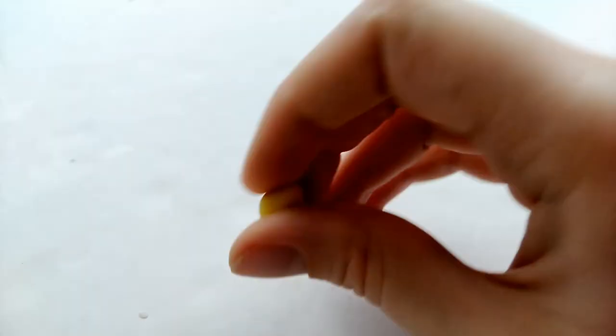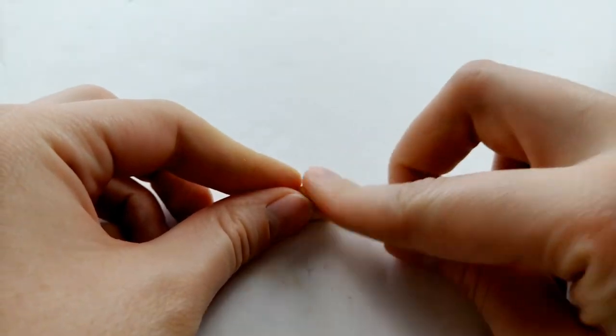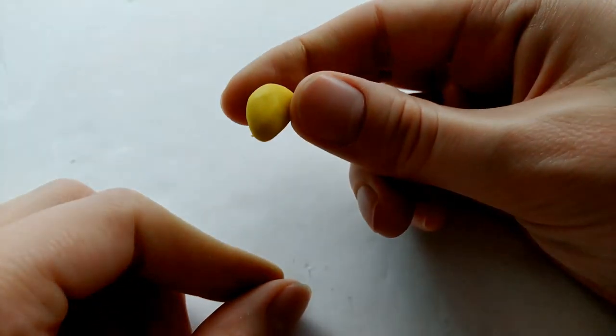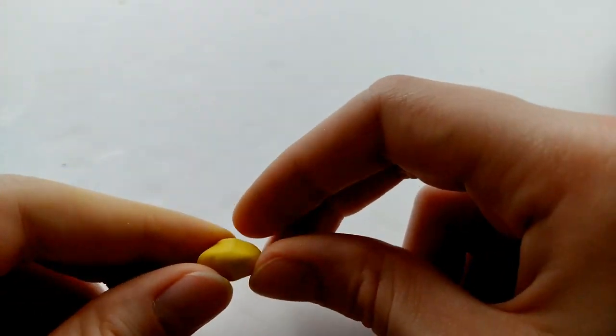Now I'm taking the extra clay we had, ripping off another piece, and this will be the giraffe's head. Kind of make it into a triangle, square shape. I ended up making it a little bit more square than you see now.